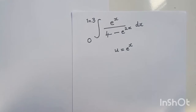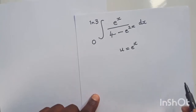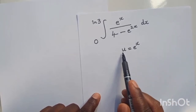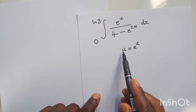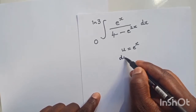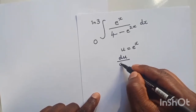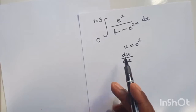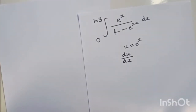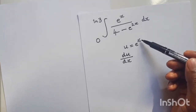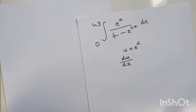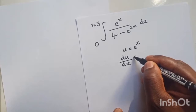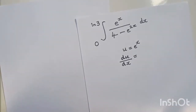If you are following from the first episode, the first stage is to make dx the subject of the formula. You have to find the derivative of u with respect to x. Since we have u on the left side, I'm going to write du as the numerator and dx as the denominator. The derivative of an exponential is the exponential itself times the derivative of the power.